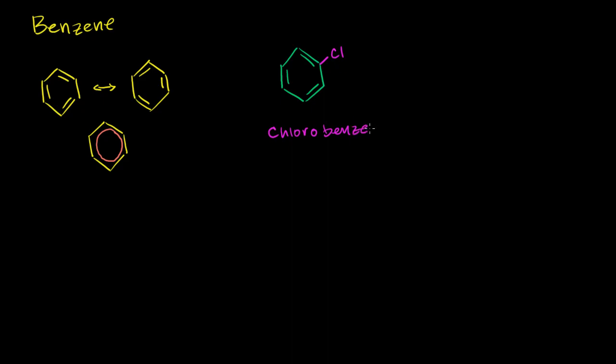If that was a bromine, it would be bromobenzene. So pretty straightforward. Let's say you had a chloro there and a bromo over here. So you could just start numbering. You could start numbering in either place. Let's start with the bromine - it's alphabetically in front. So this would be 1-bromo-2-chlorobenzene. Pretty straightforward.